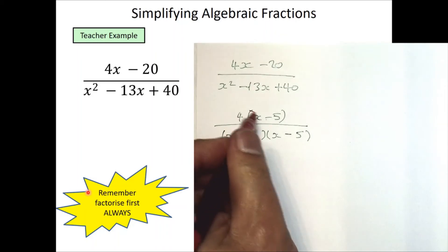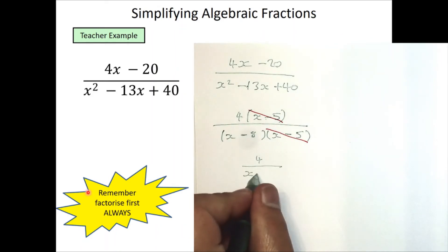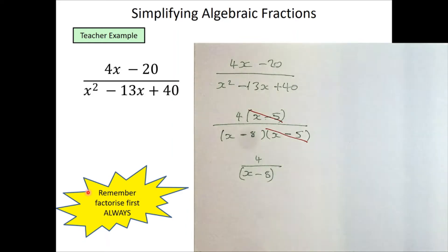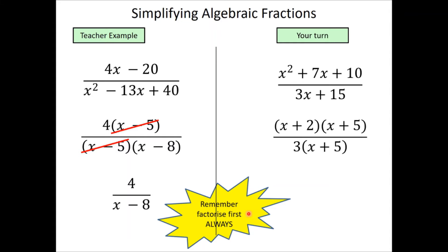The (x − 5) brackets are the same on numerator and denominator, so we cancel those, leaving 4 / (x − 8) as the answer. Pause the video and try the next question — factorize one or both of the numerator and denominator, then cancel down. For that practice question, factorizing x² + 7x + 10 gives (x + 2)(x + 5), and 3x + 15 has common factor 3, giving 3(x + 5). The (x + 5) brackets cancel, leaving (x + 2) / 3.